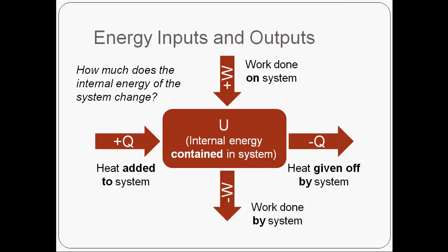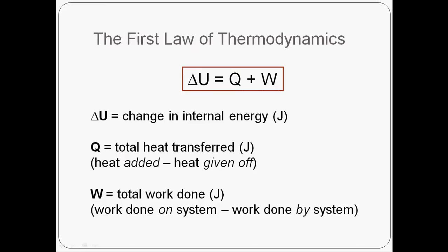Now, at the end though, one thing we might want to know is with all these different transactions happening, how much has the internal energy of the system changed? The same way that at the end of the month, I really want to know, ultimately, did the amount of money in my bank account go up or did it go down? Now, there's a very simple equation to help us determine how much the internal energy of the system changed, and that is the first law of thermodynamics. Simple formula. It's just delta U equals Q plus W. So delta U, delta meaning change in, U meaning internal energy. So delta U just represents the overall change in internal energy. How much energy did my system either gain or lose as a result of all these energy transfers?